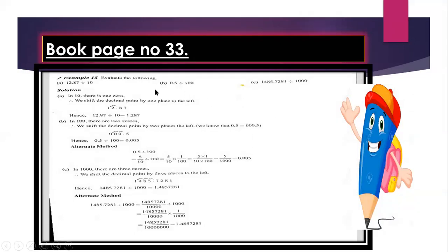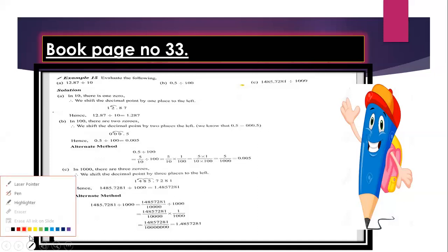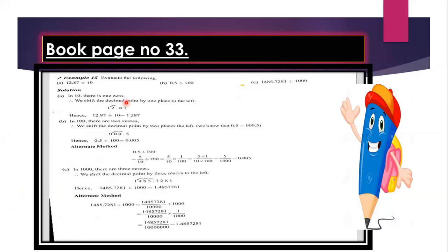Evaluate the following. The very first example is 12.84 divided by 10. We are dividing this term by 10. How many zeros are there in 10? There is only one zero. So I will shift my decimal place one point to the left.